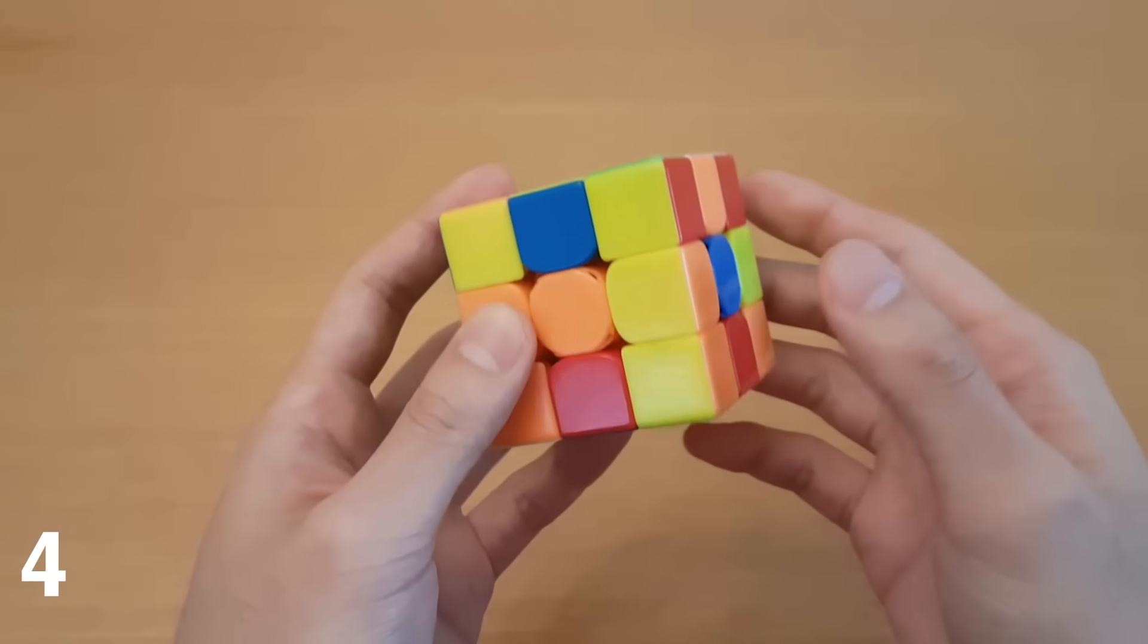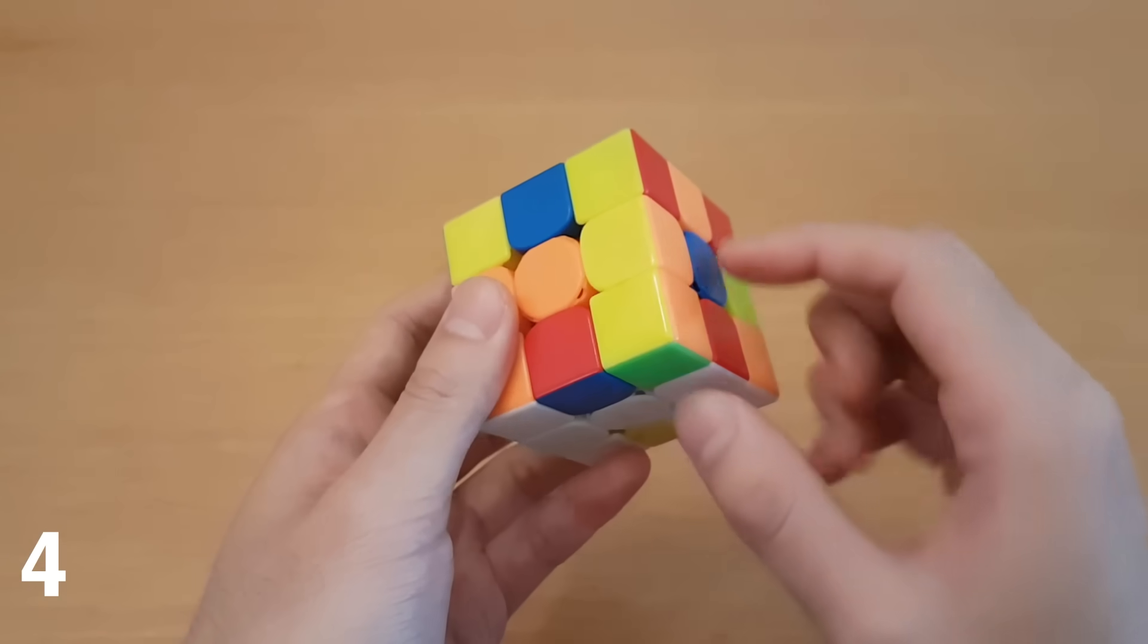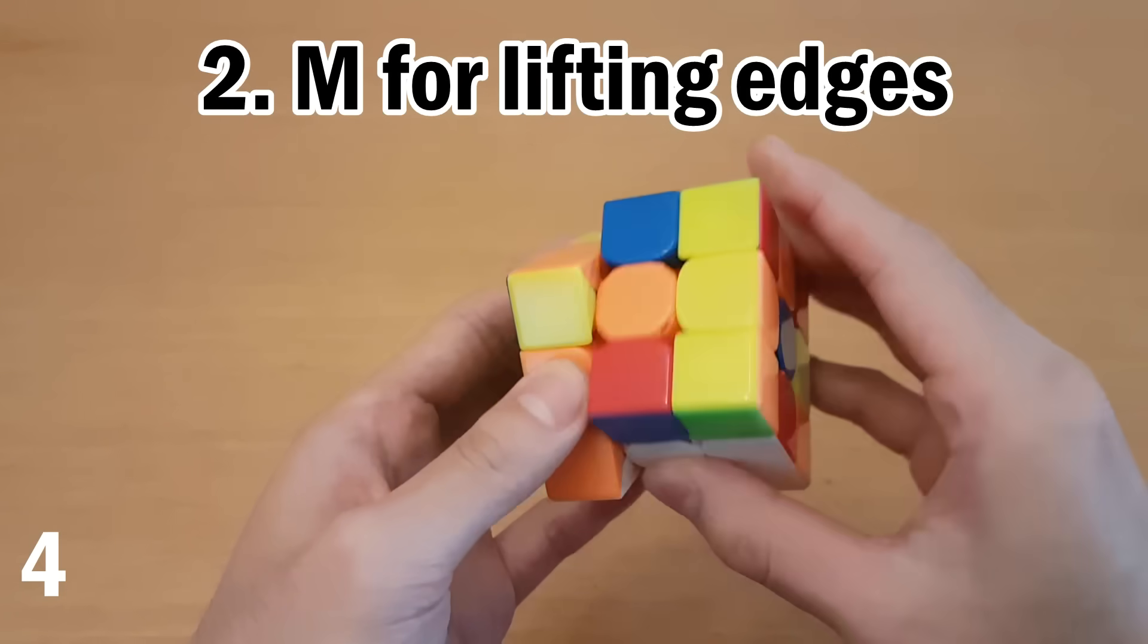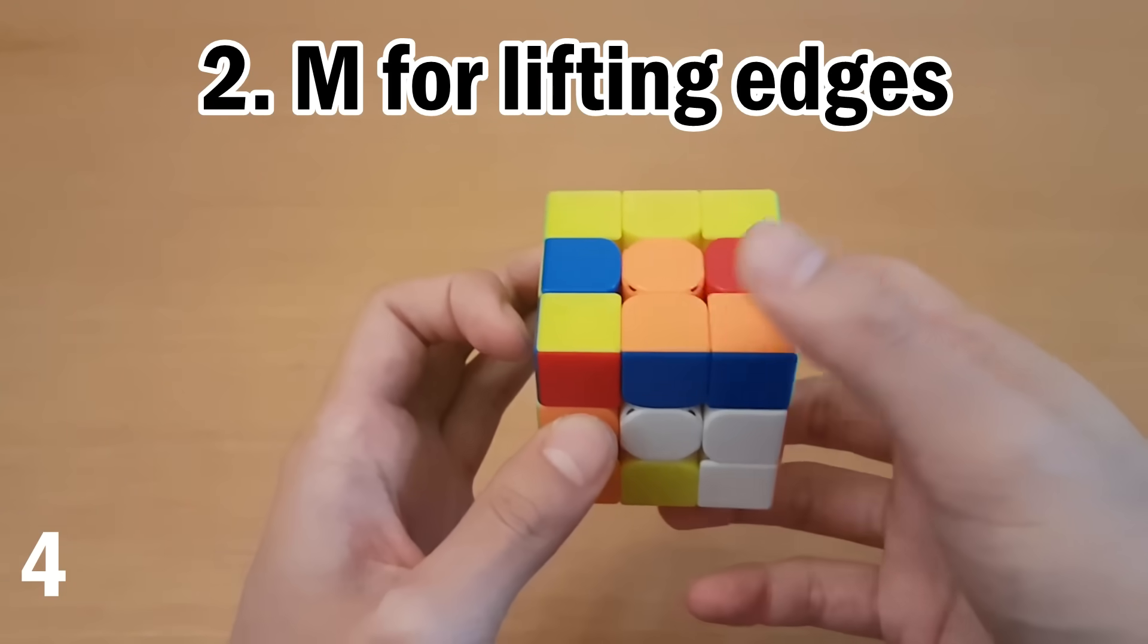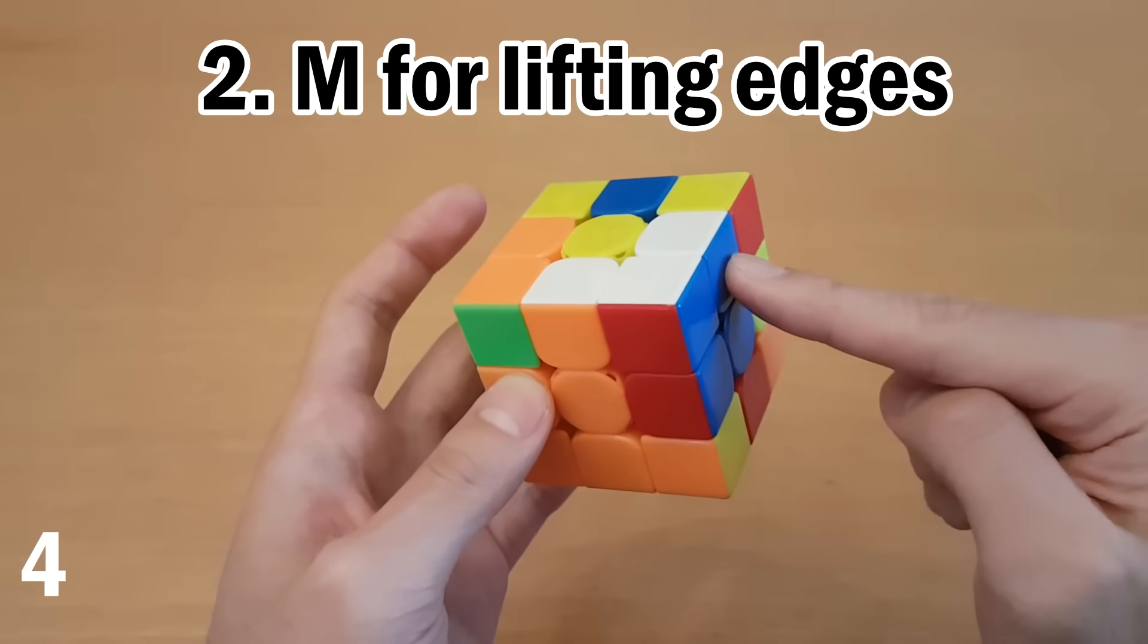Now, in this case, it's not necessarily what we want to do right away, because we also want to use the M slice to move bottom edges to the top. So in this case, I can move this edge out, attach it, and then attach this to make the square.